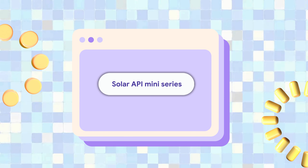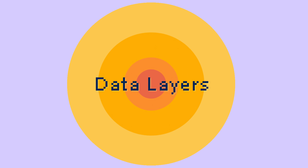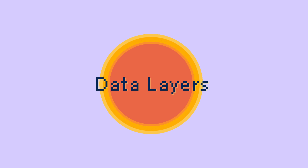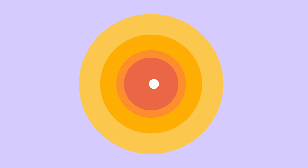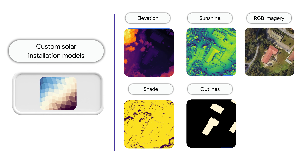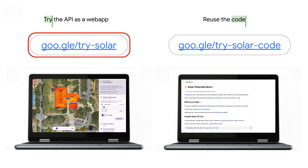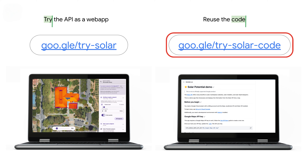Welcome to the Solar API mini-series. In this episode, we will give a quick overview about the Solar API's endpoint called Data Layers, which is a series of solar-related data sets, or raster data, that you can integrate into your solar designing software to make your own custom solar installation models. Let's begin by reviewing some of the data sets available using our example web app, which is linked in this video's description, and anyone can reuse the code to build a similar app in TypeScript if desired.